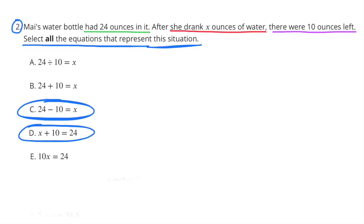Number 2. Mai's water bottle had 24 ounces in it. After she drank X ounces of water, there were 10 ounces left. Select all the equations that represent this situation. I selected C, 24 minus 10 equals X, and D, X plus 10 equals 24.